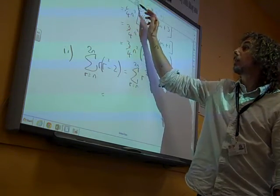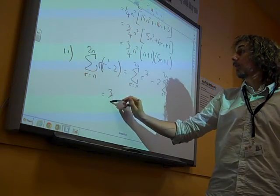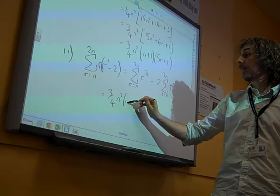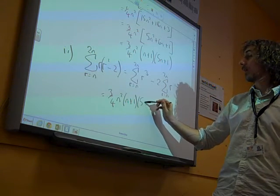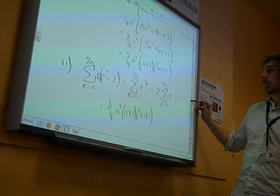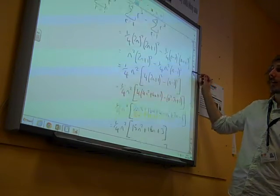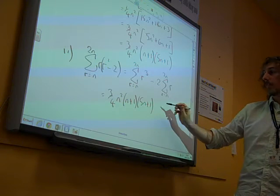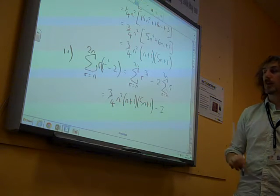The second bit, the first bit is straightforward, isn't it? The first bit is 3 quarters. We now know this. N squared, N plus 1, 5N plus 1. Because that's what we found in part 1. It's exactly the same thing. That's right with a hence.